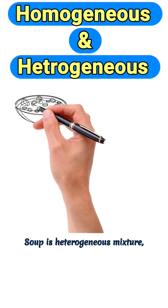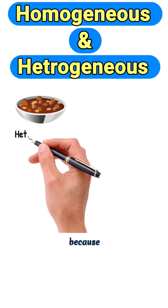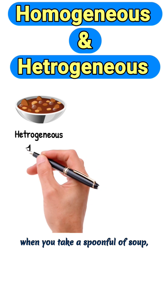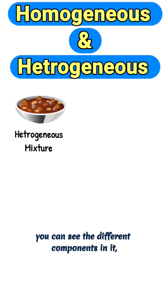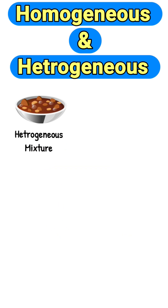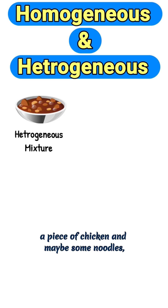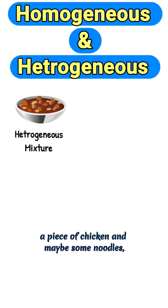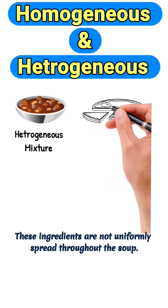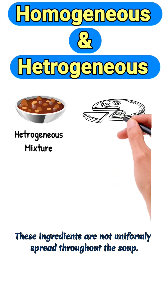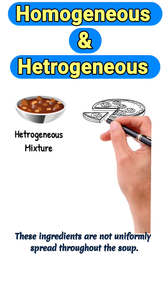Soup is a heterogeneous mixture, because when you take a spoonful of soup, you can see the different components in it — like a chunk of carrot, a piece of chicken, and maybe some noodles too. These ingredients are not uniformly spread throughout the soup.